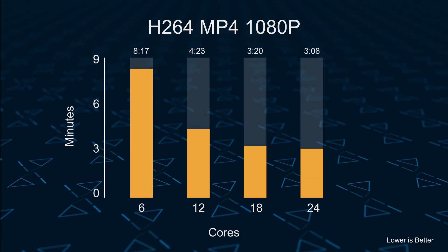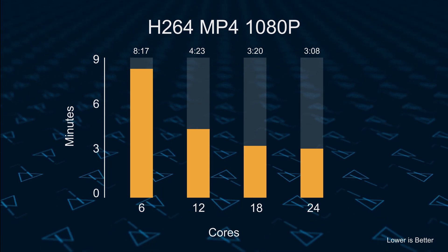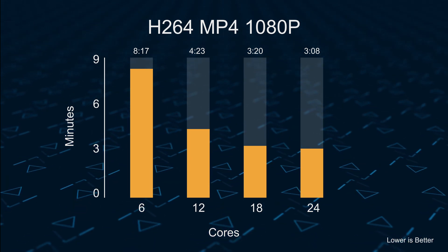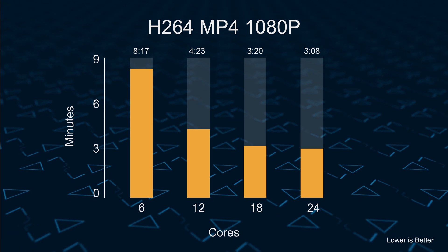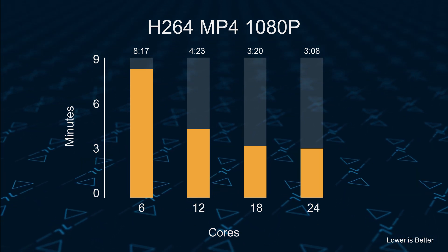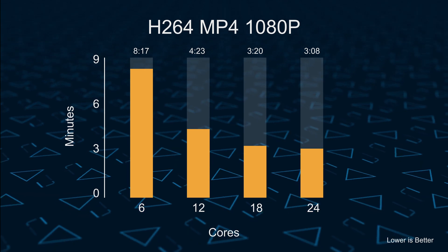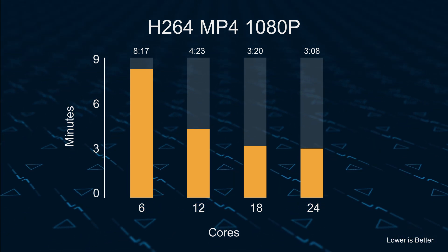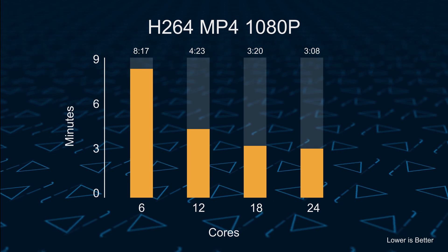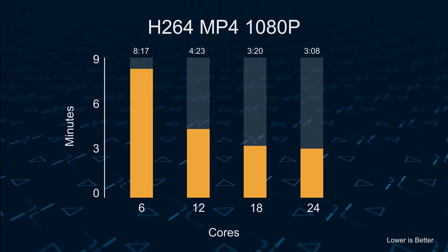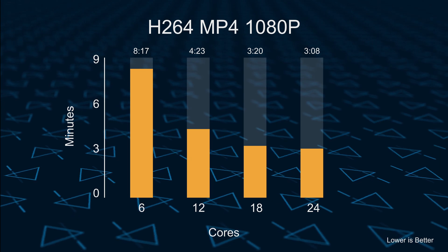Lastly, we've got the 4K 8-bit exporting to 1080p H264. The 1080p export is quite a bit faster than 4K. At 6 cores we've got 8 minutes 17 seconds; moving to 12 cores we see a 47% decrease in time, down to 4 minutes 23 seconds. 18 cores brings it to 3 minutes 20 seconds, and 24 cores is just 3 minutes 8 seconds. The biggest performance increase is from 6 to 12 cores, then less again from 12 to 18, and even less from 18 to 24 cores.